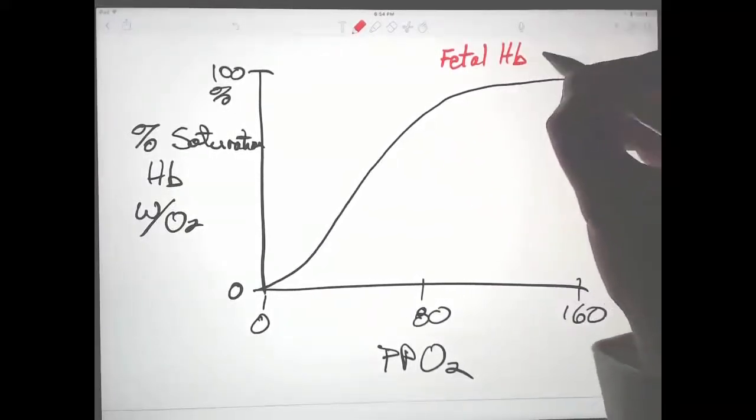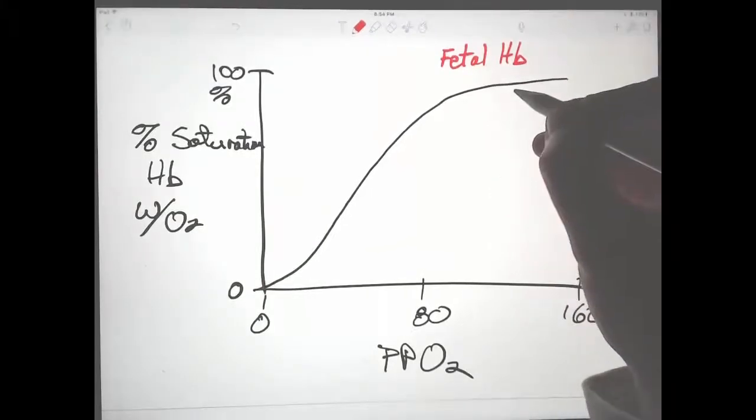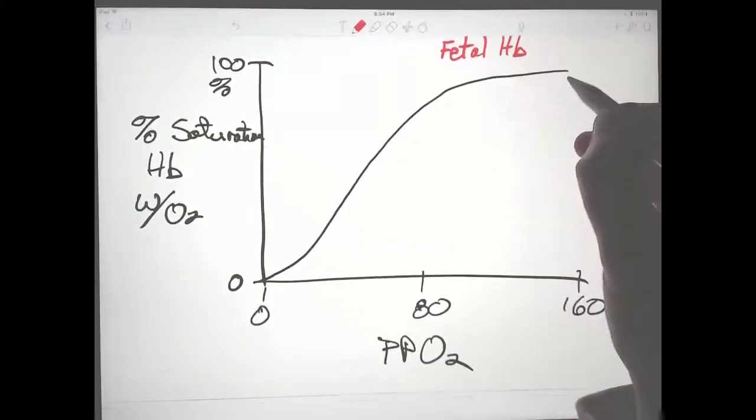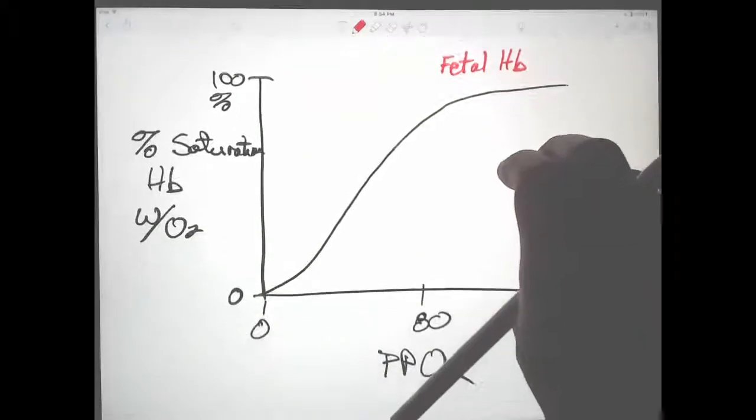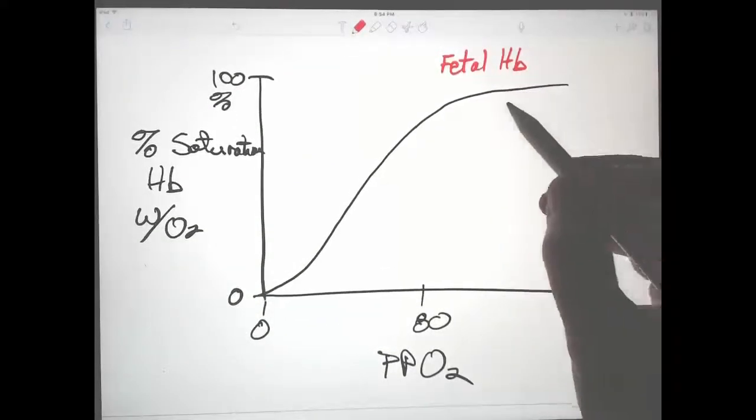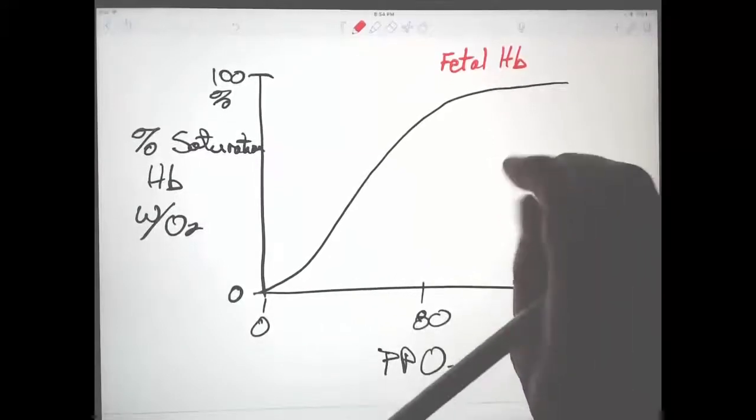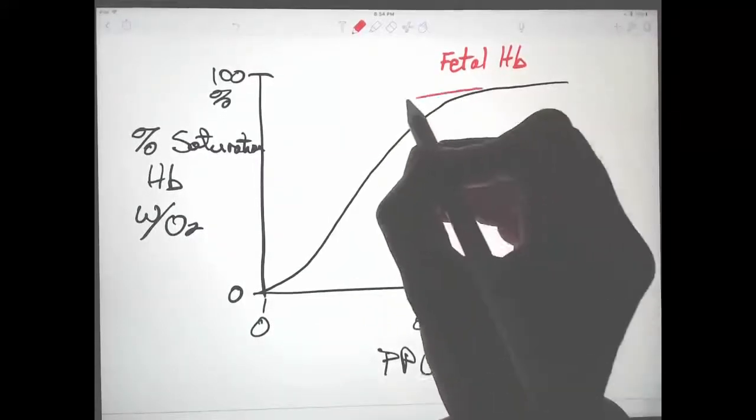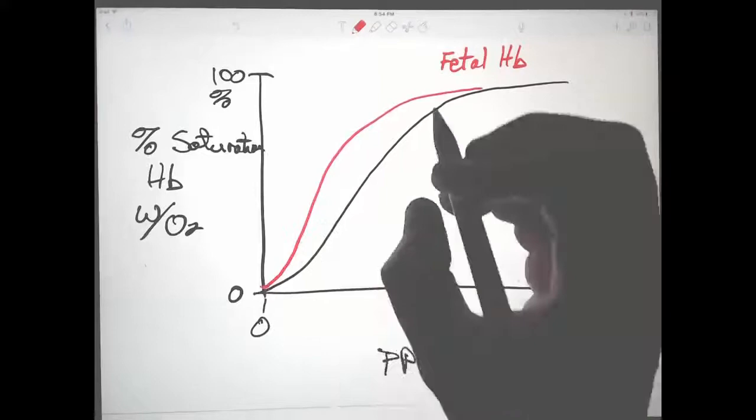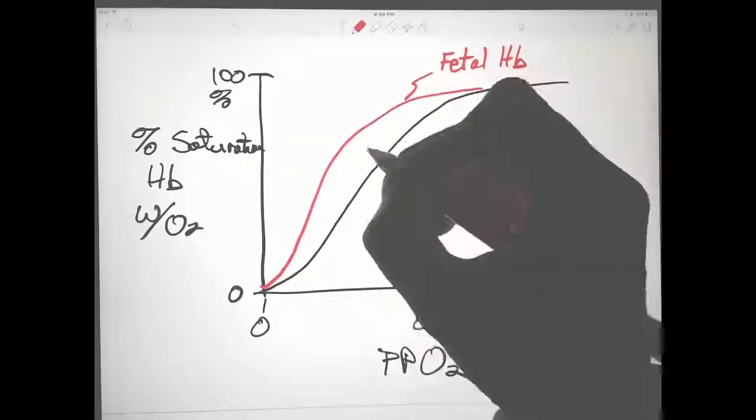If you think about a fetus, an embryo needs to get its oxygen from mother, so we need to transfer oxygen from the mother to the embryo. If their oxygen dissociation curves are exactly the same, then the fetus is likely to be a little bit short on oxygen. But fetal hemoglobin has a higher affinity than maternal hemoglobin.